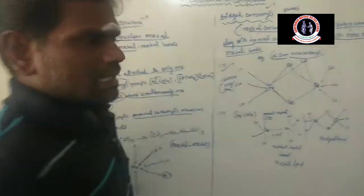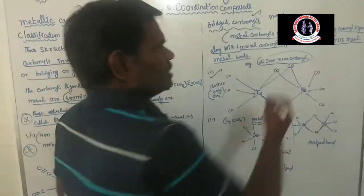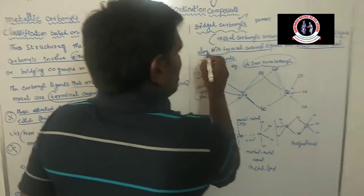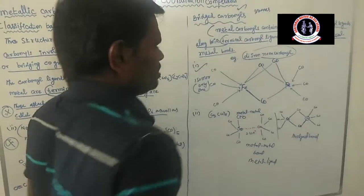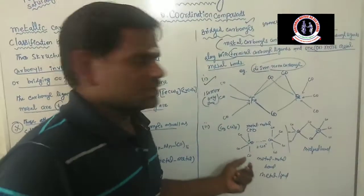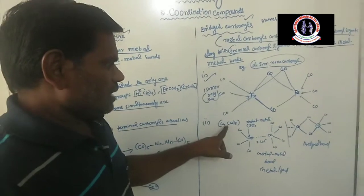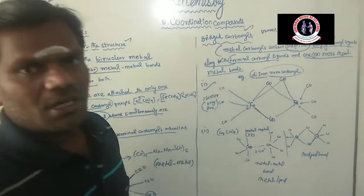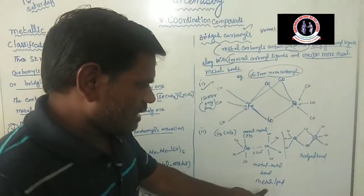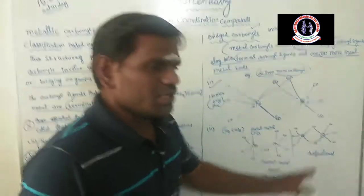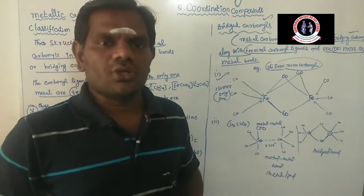In summary, metallic carbonyls contain one or more bridging carbonyl ligands along with terminal carbonyl ligands and one or more metal-metal bonds. Two key examples are di-iron nonacarbonyl and di-cobalt octacarbonyl, the latter exhibiting two types of isomers: one with metal-metal and metal-ligand bonds, and another with bridging nature. We will meet in the next class with another topic. Thank you so much.